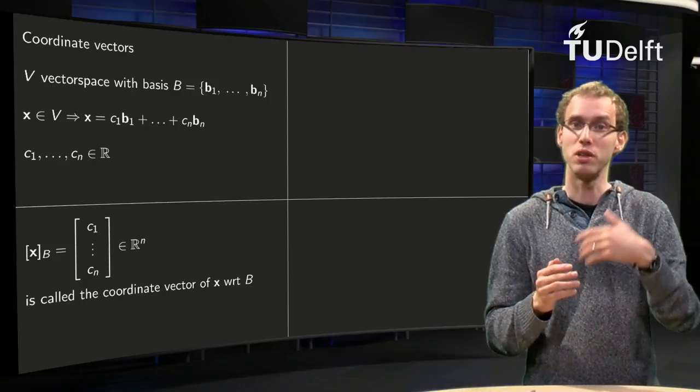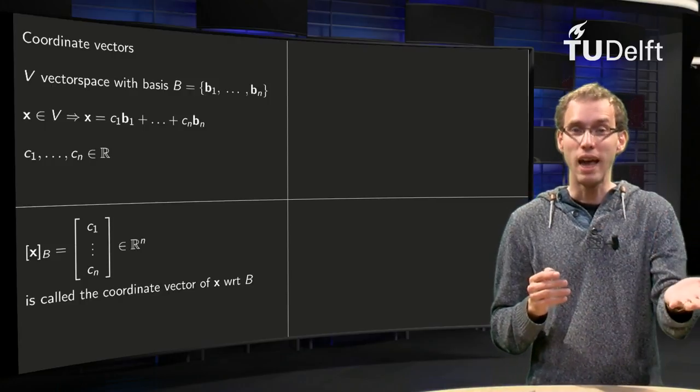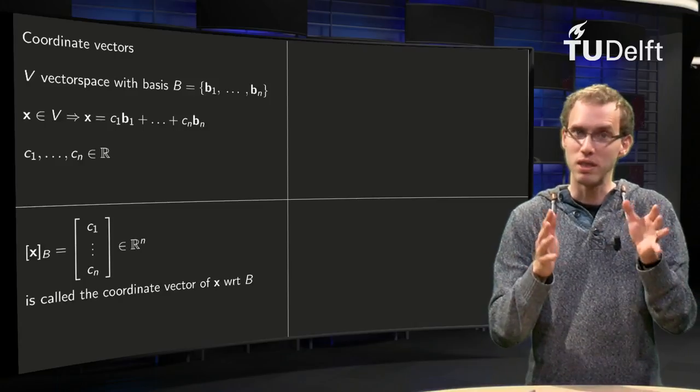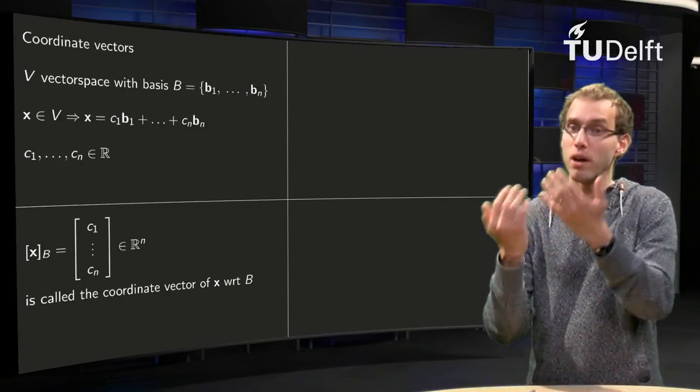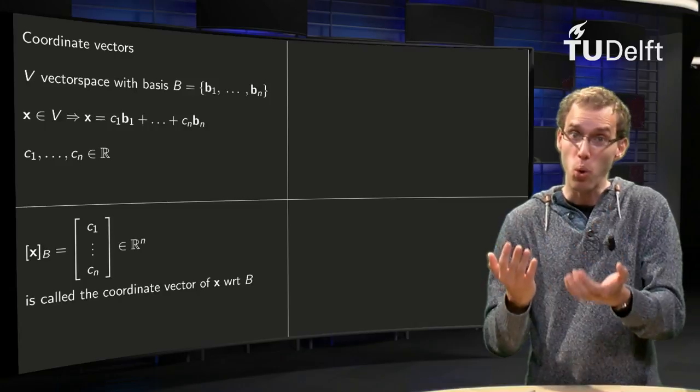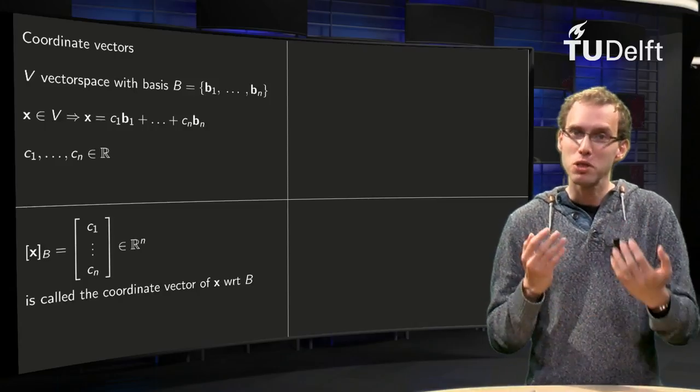So now I can choose whether to use my x, which may be some polynomial or whatever, something not so nice, or whether I can use my xB, its coordinate vector. How does that work?